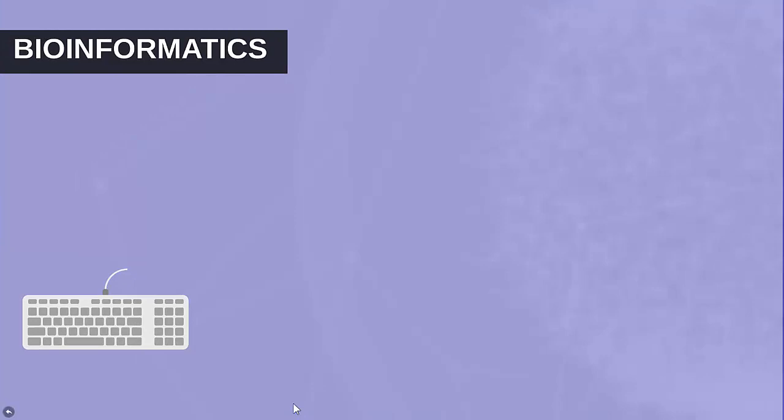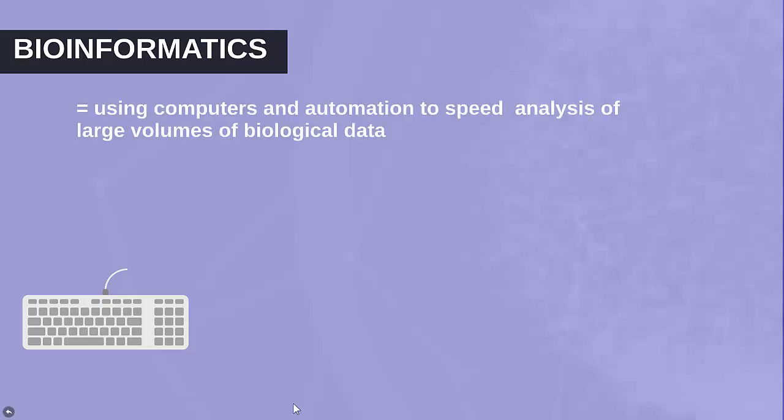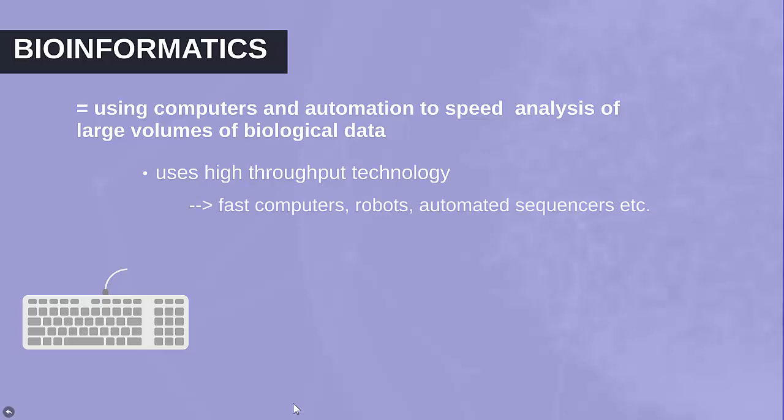Bioinformatics is one of the ways we can do this. Because there is such a volume of information—six billion base pairs in your DNA—it's too much for human beings to calculate. Bioinformatics uses computers and automation to speed the analysis of large volumes of biological data. It uses high-throughput technology, which means really fast computers, robots, and automated sequencers.